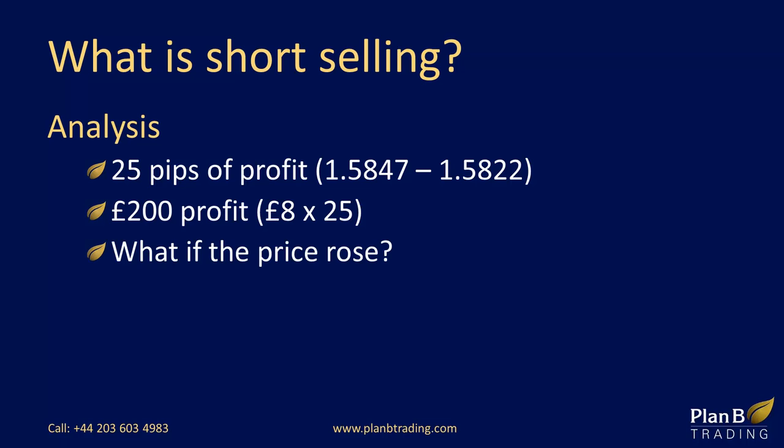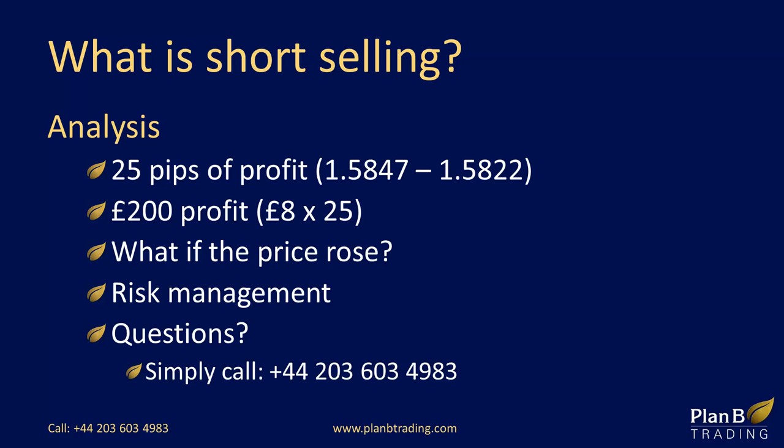It is possible to make losses using spread betting when prices move against you. If the price had risen, my losses would have accrued at the same rate, so a 25 pip rise equates to a loss of £200. You need to understand risk management fully, coupled with the use of stop losses. In this example, I used UK pounds to trade the British pound and US dollar and did not have to do anything other than open and close the trade. The equivalent trade in a Forex account would involve selling a specific amount of currency.